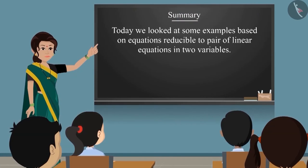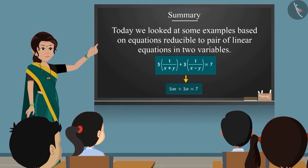Hence, Ruchi's walking speed is 10 km/h and the speed of the bus is 40 km/h. In this video we saw some examples of how to represent equations in the form of linear equations in two variables. In the next video we will look at the common mistakes made while solving such questions.